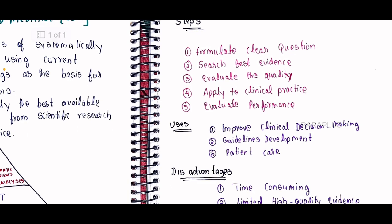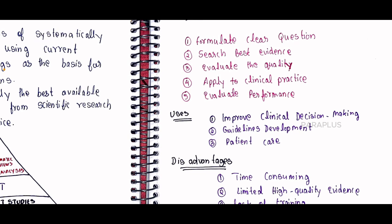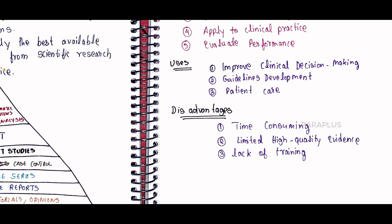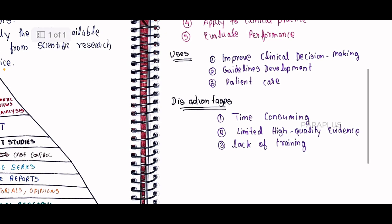Please check the steps. The evidence-based uses are very useful for clinical decision-making and for guidelines. This is proper patient care. A disadvantage is that this is a time-consuming process. There is limited high-quality evidence. If you show a high-quality journal, we need to check the scope and indexing articles.